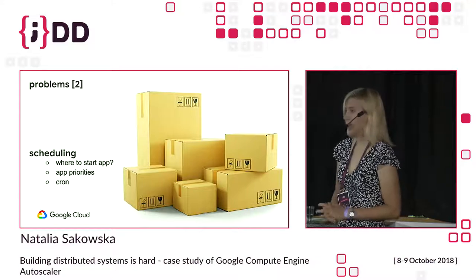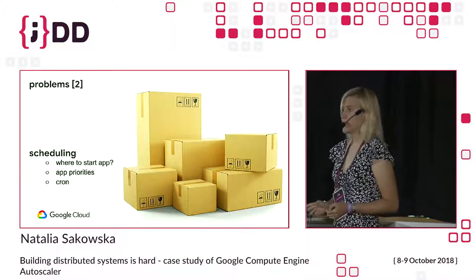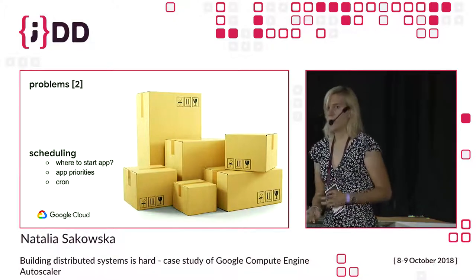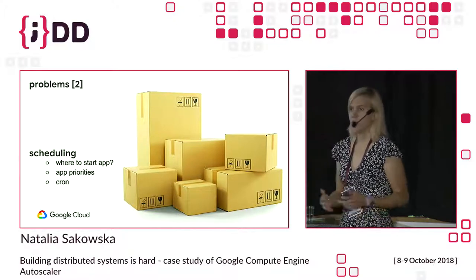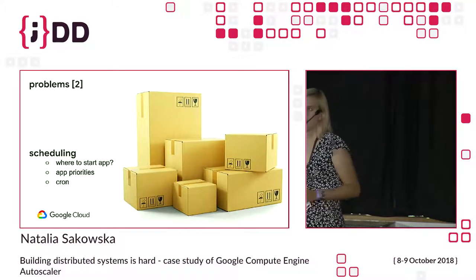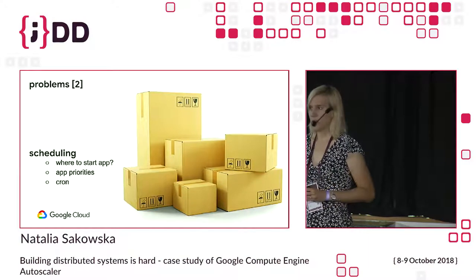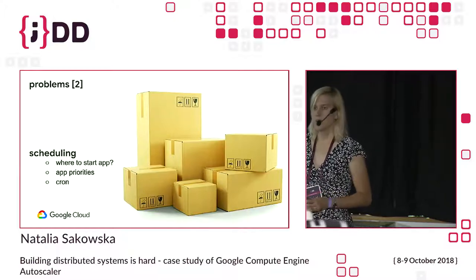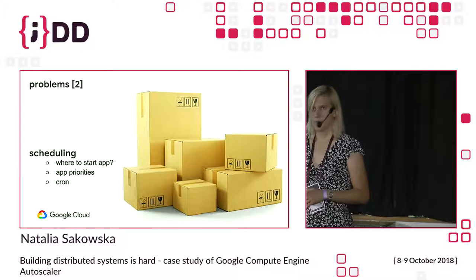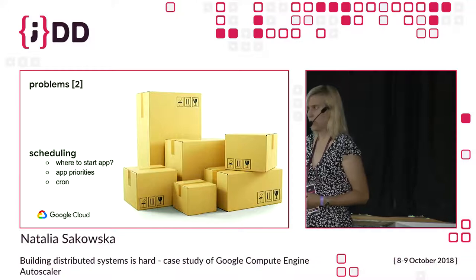While Borg packs all these services on computers, it sometimes needs to preempt some of them because one or a few services are receiving higher load than expected. This is why we have priorities — we treat differently a monitoring or production service versus a test application or batch computation that can be rescheduled without any consequences.